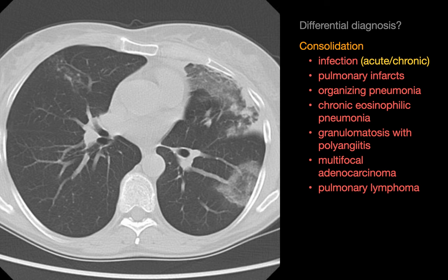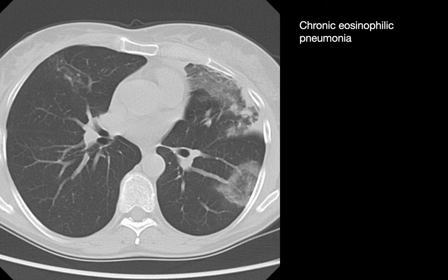Although reverse halo sign is classically associated with organizing pneumonia, it is not a terribly specific sign, as everything on this list with the exception of pulmonary lymphoma could manifest with a reverse halo sign, which means we are left with this differential diagnosis. This case ended up being an example of chronic eosinophilic pneumonia.